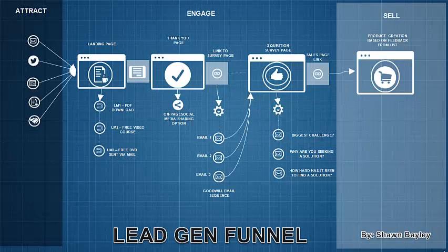So let's take a look at the funnel as it is on the blueprint. Under my attract method, I've got all kinds of different ways — whether it's through affiliates, Twitter, Facebook, blog posts, or content — however I've gotten this person to come and land on my blog. I've got it set up with three items on the sidebar: three lead magnets — a PDF download, a free video course, and a free DVD sent in the mail. I've got three modalities covered, and as soon as they click, they opt in and they're on my list.